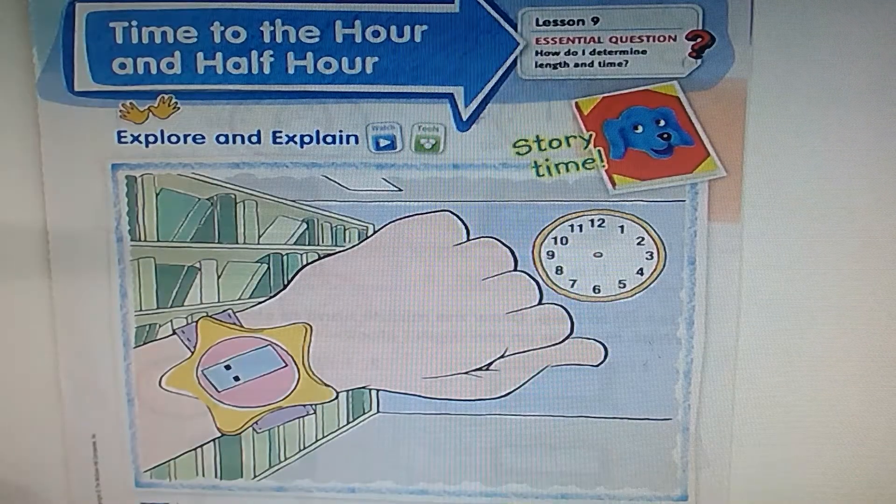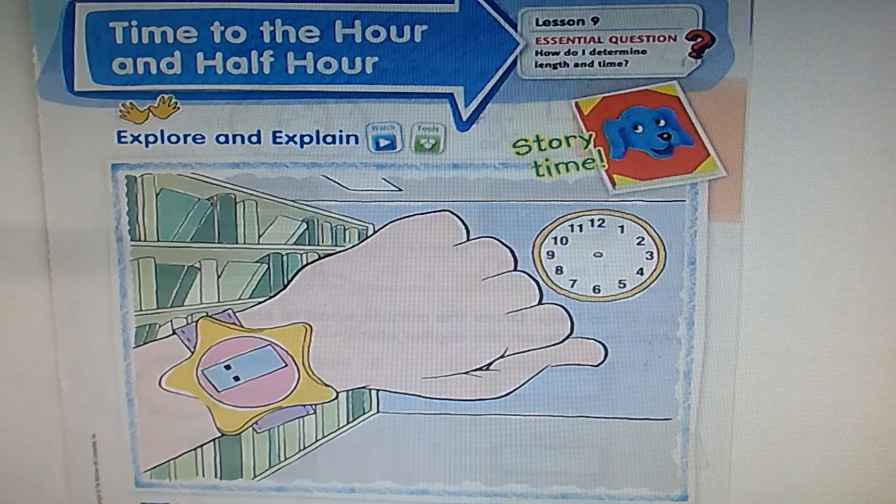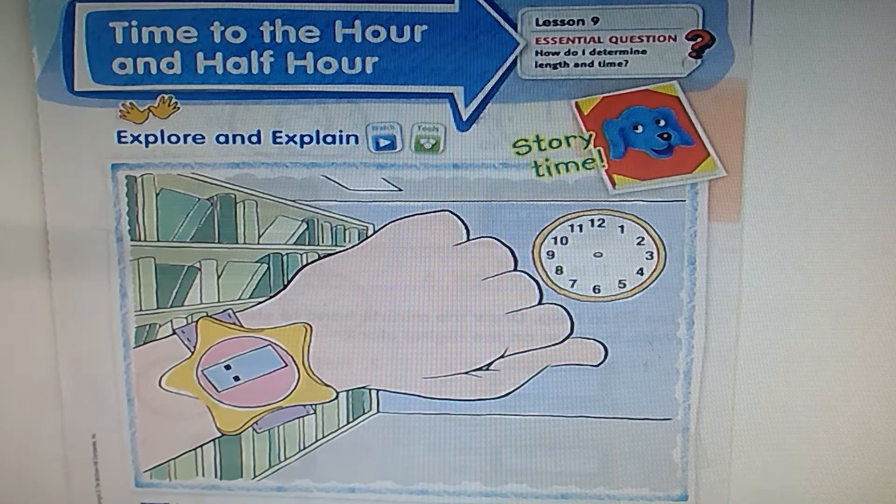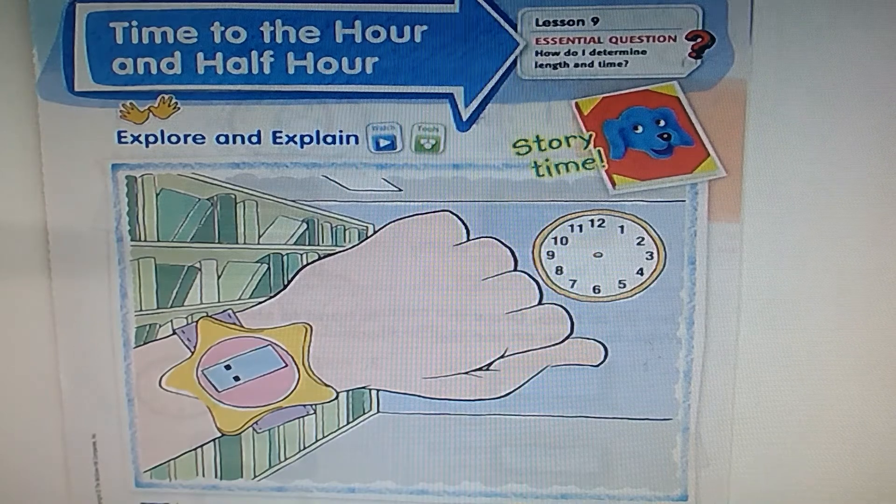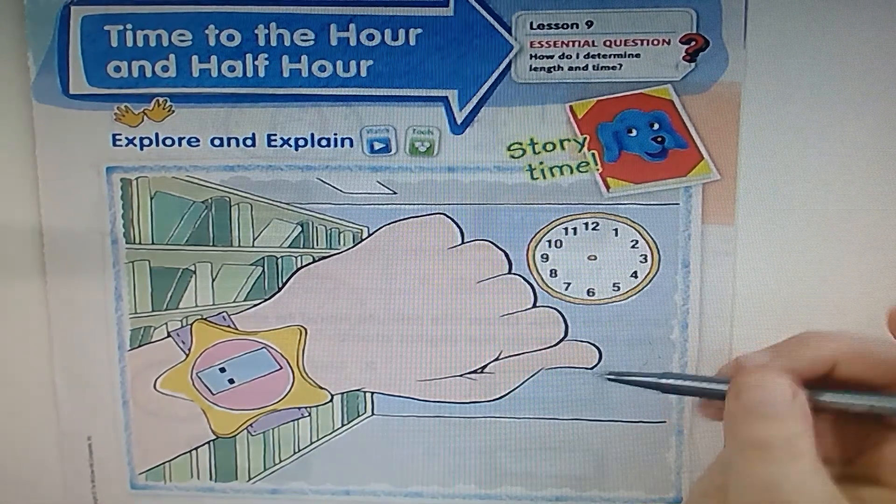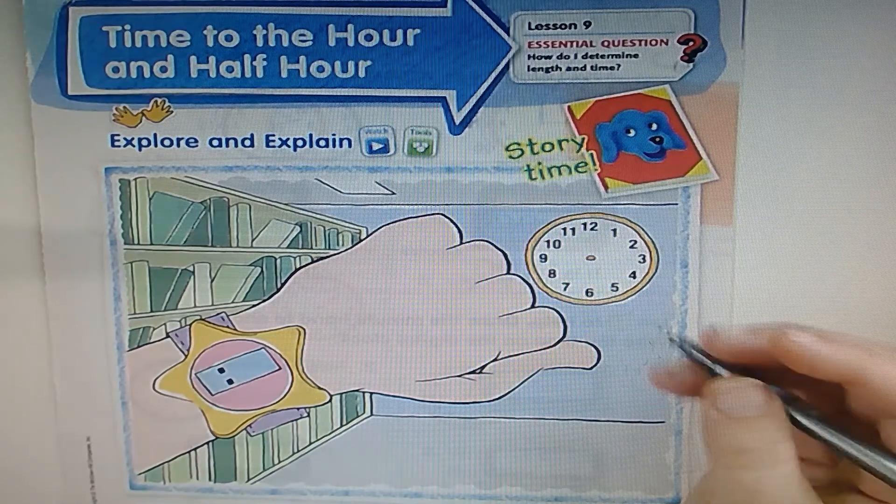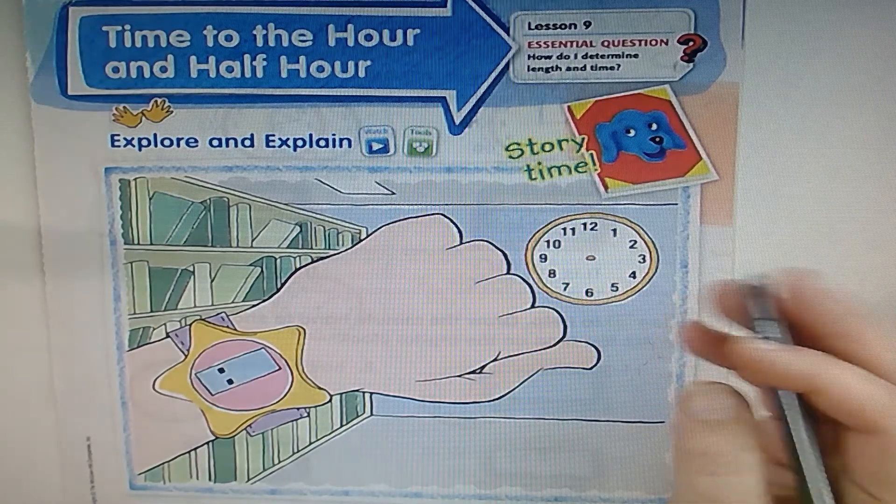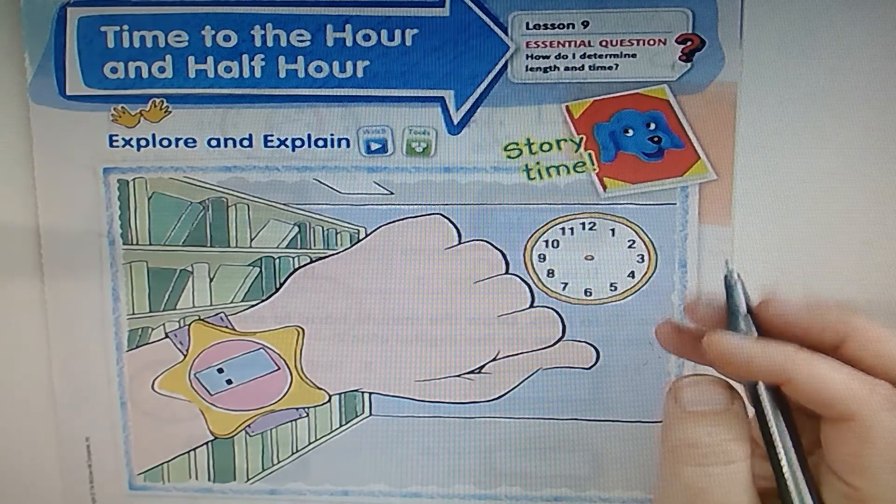This lesson today is about time to the hour and half hour, kind of a review of both. Now it says on the bottom, a class went to the library at 1:30. Find the analog and digital clocks in the picture and show 1:30 on both.